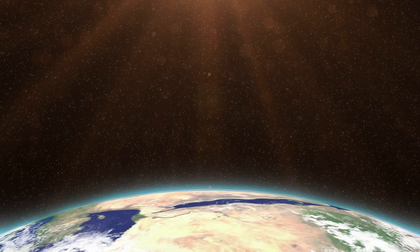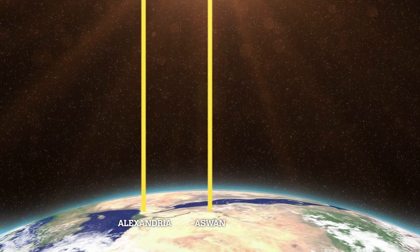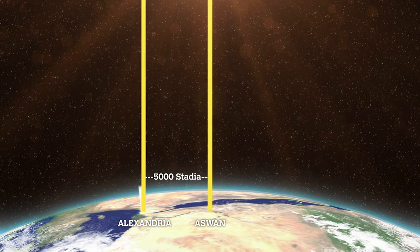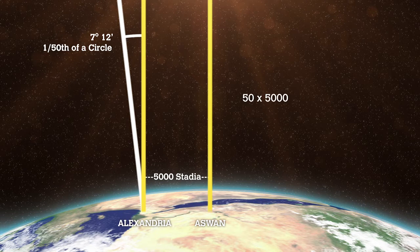Eratosthenes measured the sun's angle of elevation at noon on the same day in Alexandria, 5000 stadia to the north. He calculated the sun's angle to be 7 degrees and 12 minutes from the vertical, one fiftieth of a circle's circumference. He then multiplied these two figures together to get a figure of 250,000 stadia.